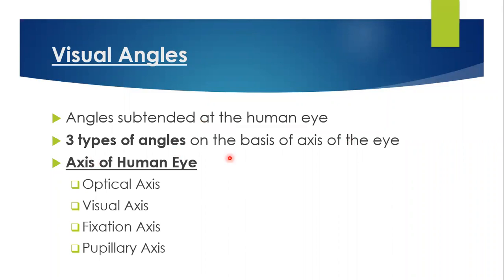The axes of the human eye — what are these axes? Optical axis, real axis, fixation axis, and pupillary axis. We will discuss these in a later video. But first, the three types of angles: they are angle Kappa, angle Gamma, and angle Alpha. And they are based on the axes of the eye.